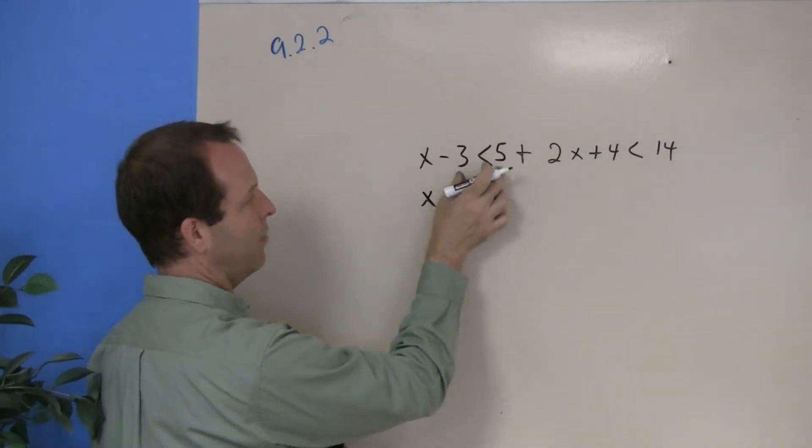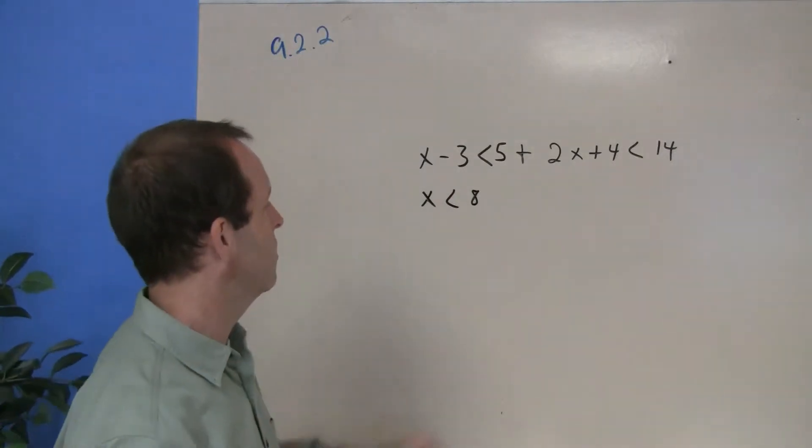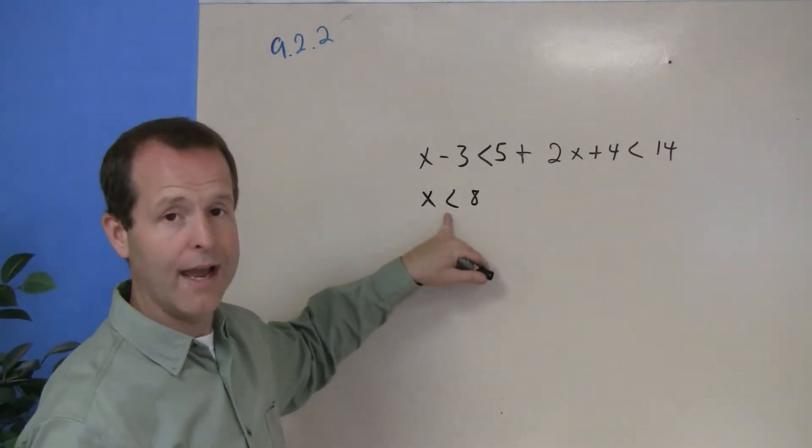So x, add 3 to both sides, gives me an 8. So one solution says this is true for all x's less than 8.